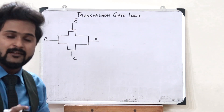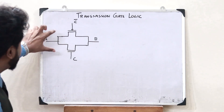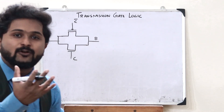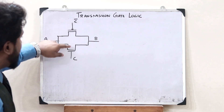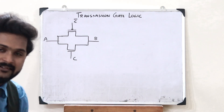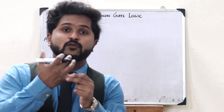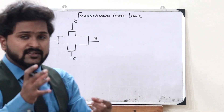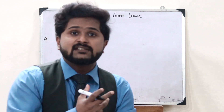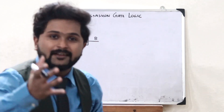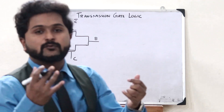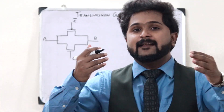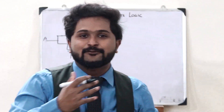This transmission gate works based on these control signals. It acts as a bilateral switch that is controlled by an externally applied signal — they act as voltage-controlled switches. That is why we use transmission gate logic: in order to implement something as a voltage-controlled switch. A transmission gate logic can be used for switching both analog as well as digital signals.